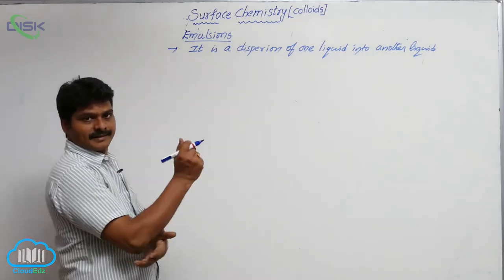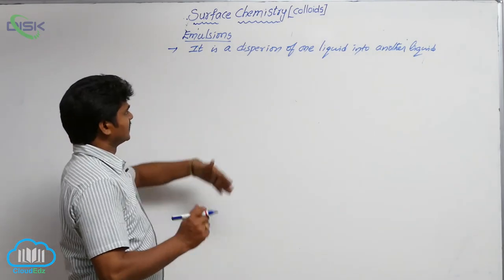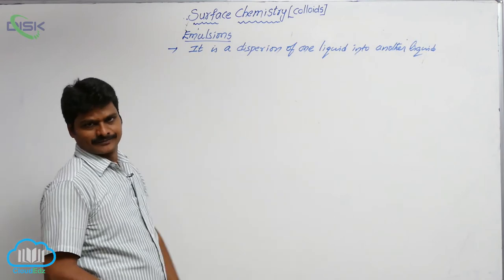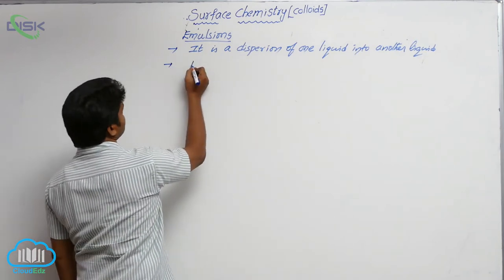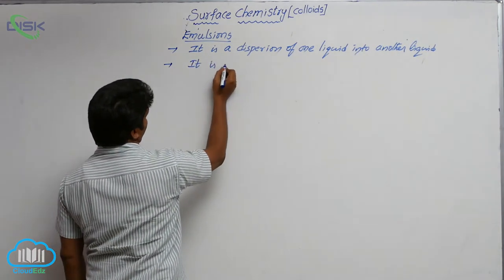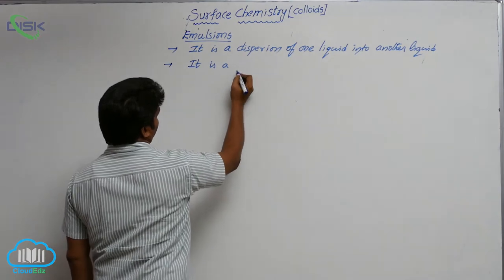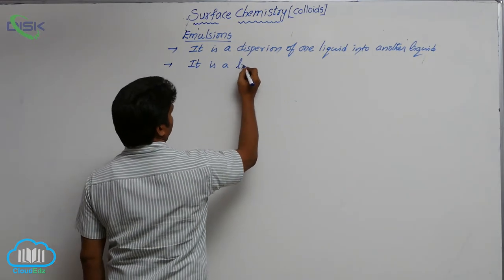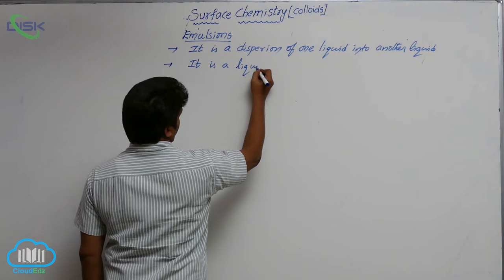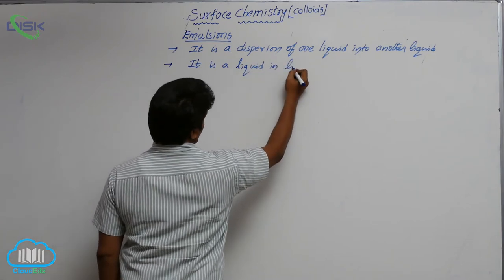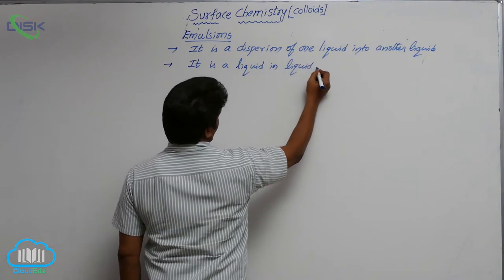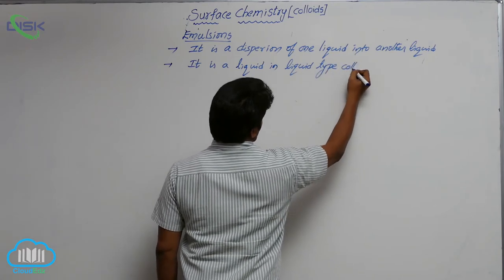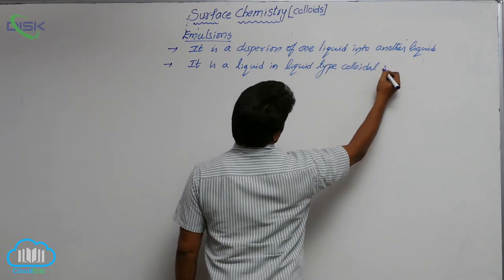What is emulsion? It is a dispersion of one liquid into another liquid. That means an emulsion is a liquid in liquid type colloidal solution.